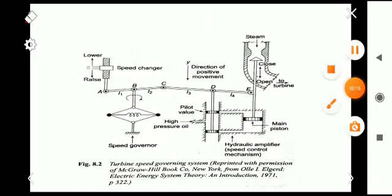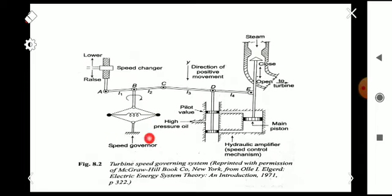This is the turbine speed governing system we have already learned in the previous videos. The flyball speed governing is a very important part here — as the speed increases, the flyballs move outwards. In effect, point B moves downwards, the lower pilot valve opens, and high pressure oil flows through this path to the main piston, moving it upwards and reducing the steam flow.